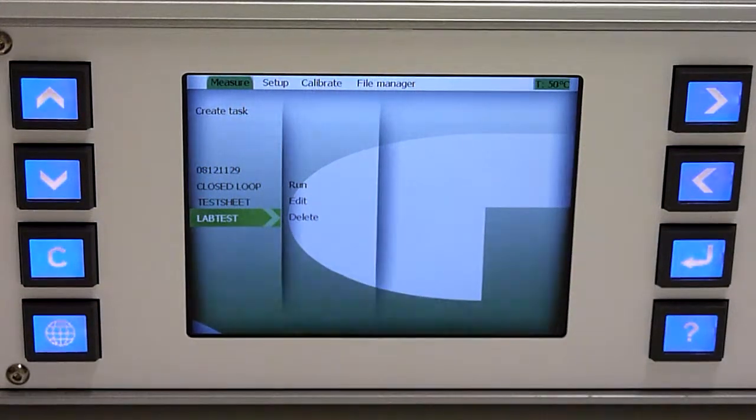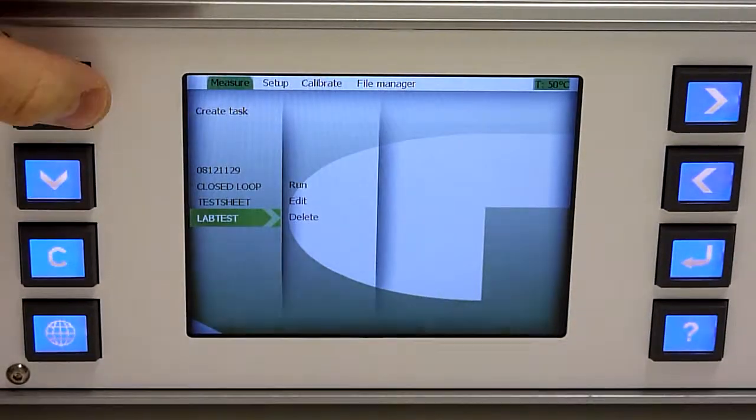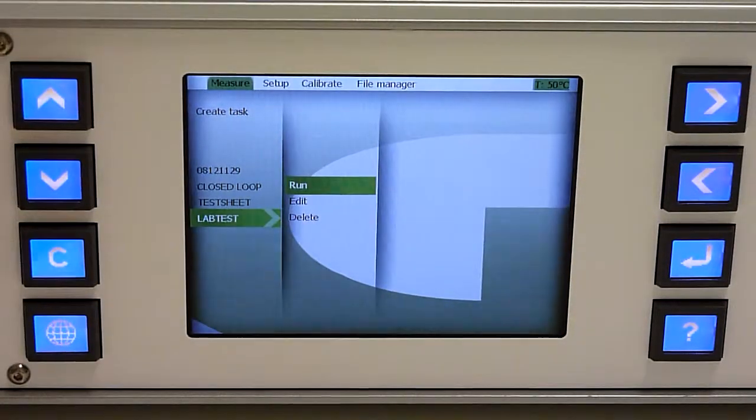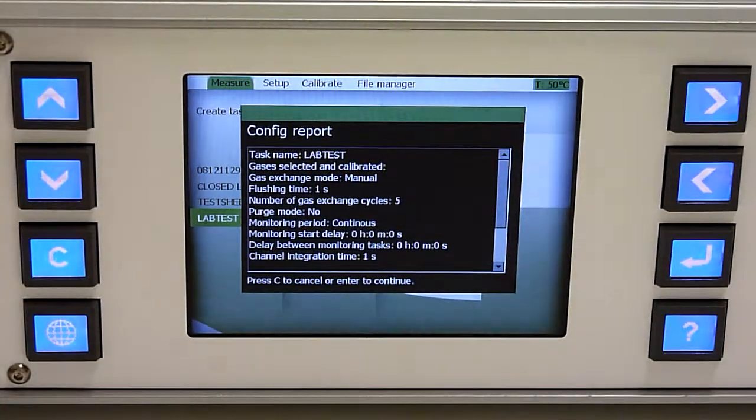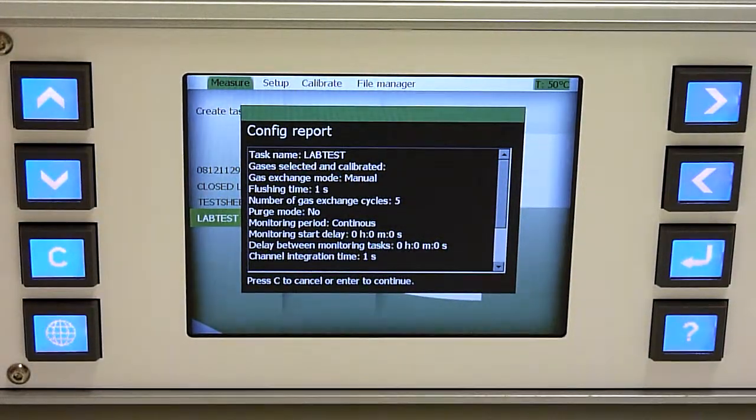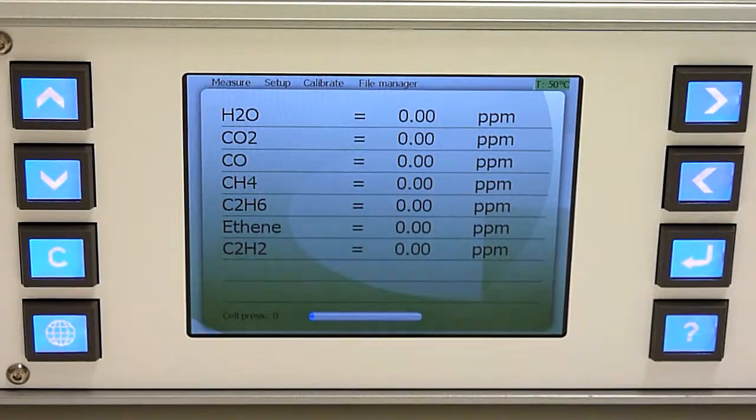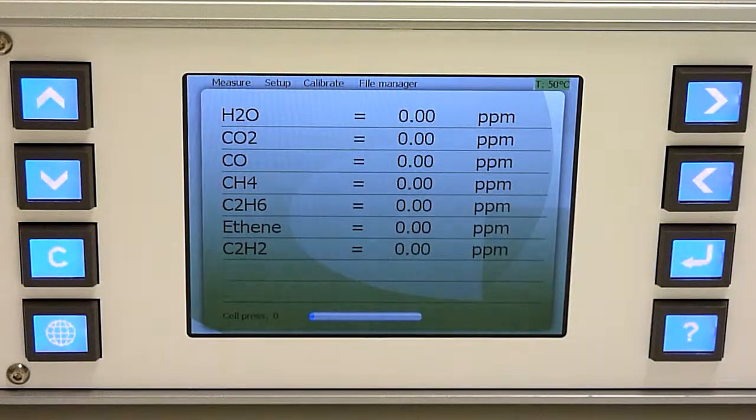I will now start the measurement. You choose the measurement task, select Run, and press Enter. The instrument shows you a summary of the measurement task. If you re-press Enter, you will start the measurement.